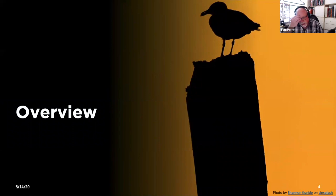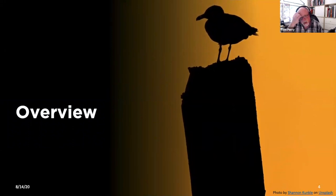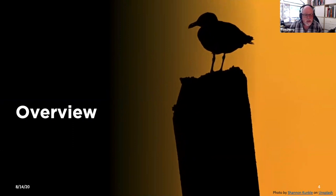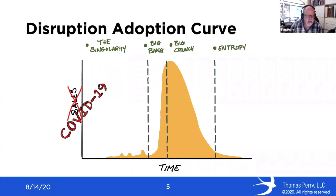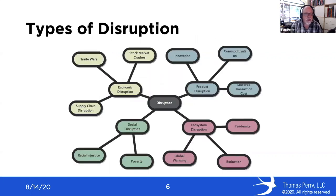Disruption has been very prevalent for all of us these days. You see it in the disruption adoption curve. When we talk about how disruption tends to work these days, it's very sudden and very overwhelming. It turns out that it's not just sales that is important — disruption can affect the business in a variety of different ways. When you stop and think about this, there are many types of disruption.